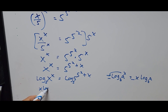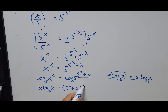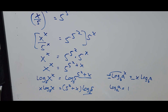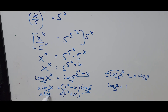Bringing the exponent down as a coefficient, this is now x times log of x to base 5 equals 5 squared plus x times logarithm of 5 base 5. Using the logarithm identity that log of a to base a equals 1, since the base matches, the right side of the equation becomes 5 squared plus x times 1. The left side remains x log of x to base 5.